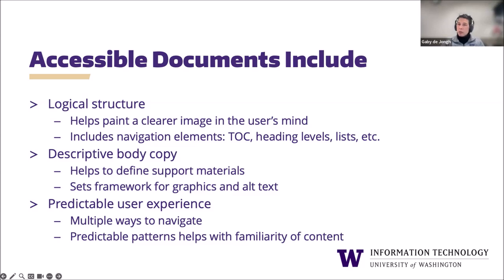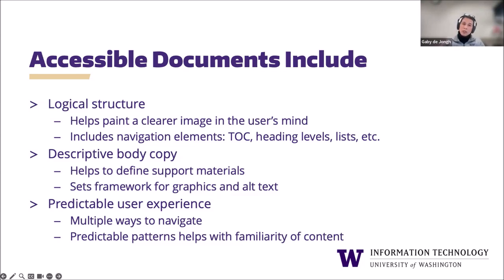Descriptive body copy is sometimes overlooked, but it plays a significant role in accessibility. Content should describe supporting materials that are included, and that sets the framework for graphics. Descriptive body copy helps keep alt text short and to the point. You also want to make sure you're providing a predictable user experience. The relationship between headings and paragraphs, figures, and page structure allows the reader multiple ways to navigate a document reliably and helps establish predictable patterns, which helps the reader gain familiarity with the content.